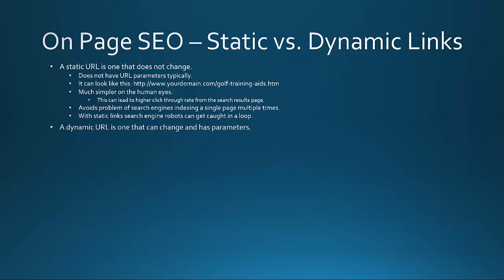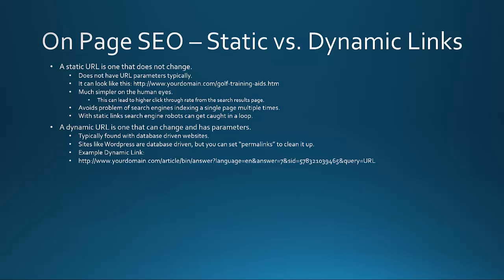A dynamic URL is one that can change and has parameters tied to it. Those parameters might include a question mark followed by numbers or different values that show up to different people. It's typically found within database-driven websites. Sites like WordPress are database-driven, but you can set permalinks to really clean things up and give each page a solid static URL that is shown to both search engines and users.